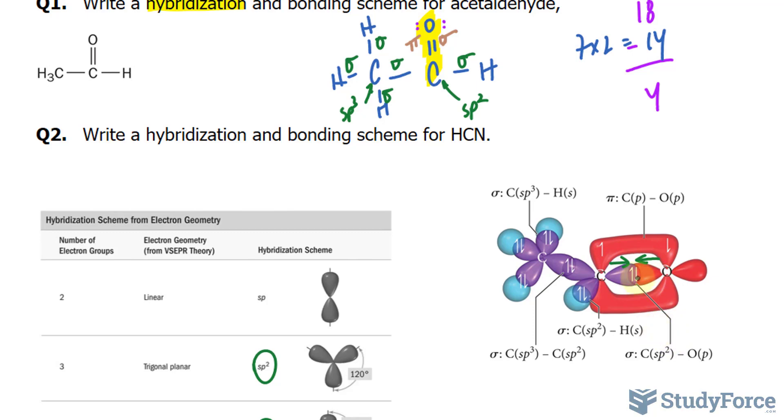Therefore, we have a sigma bond here. And the other electron being shared with oxygen, they were found in orbitals that are parallel to one another. And so that is referred to as a pi bond.